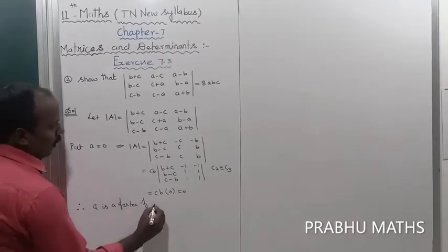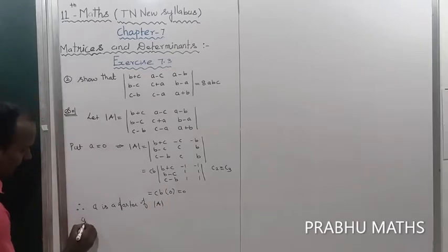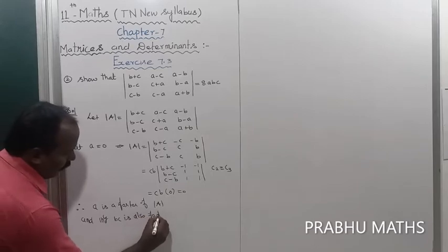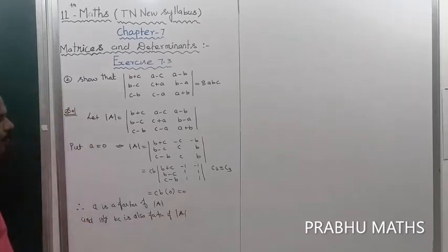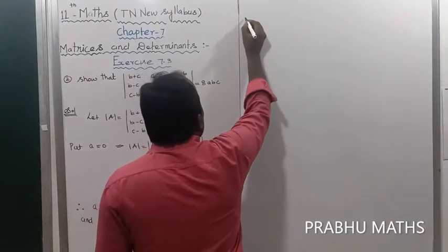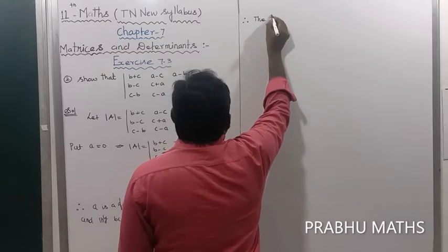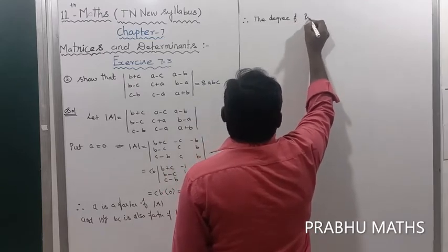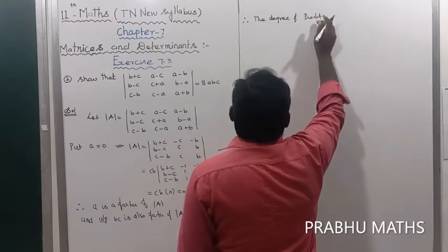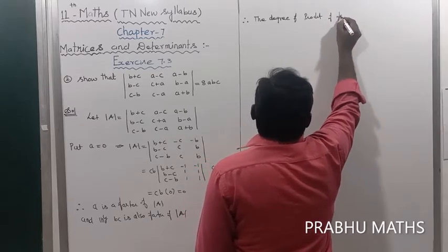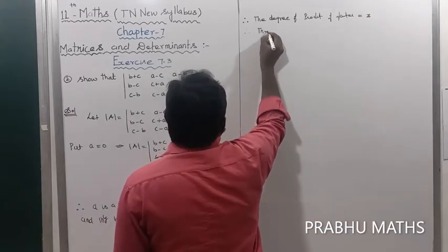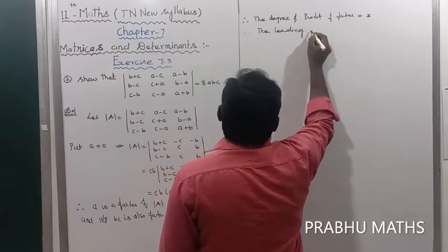Similarly, b and c are also factors of Δ(a). Therefore the degree of the product of factors is equal to 3. The leading diagonal degree is also equal to 3.